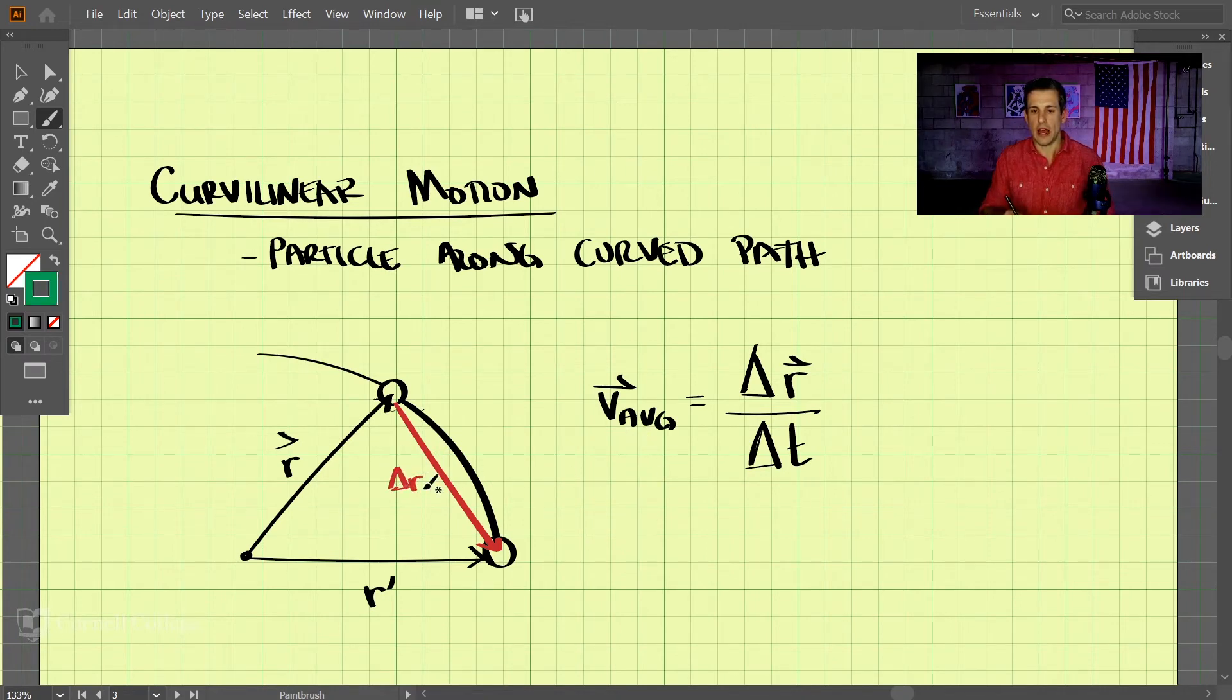Now that we have the change in r here, what we're actually looking for is this displacement or change in s. You can tell by the change in r and the change in s, there's some differences here. If we took the particle at time 1 and time 2,